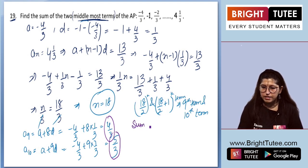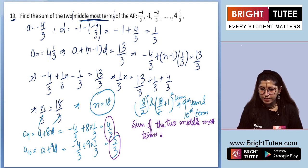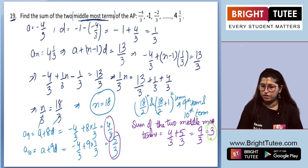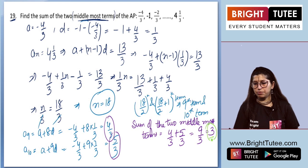Now this is also not the final answer, because they asked for the sum of the two middle most terms. So we will be adding these two terms, and then we can say that will be the final answer. So it will be 9 by 3, which will be 3. So this is the final answer which we have. The sum of the two middle most terms will be 3.